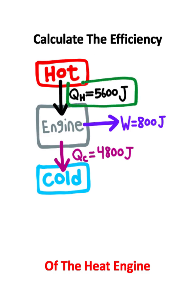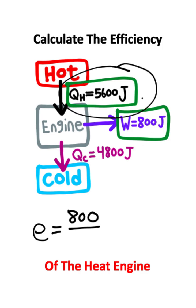We have the total heat absorbed by the engine, and the work which the engine does. To calculate the efficiency of the engine, all you need to do is take the work that the engine does and divide it by the total heat absorbed by the engine.